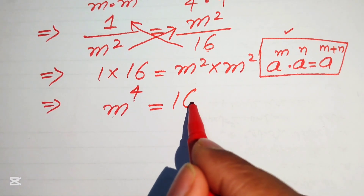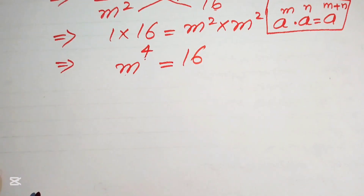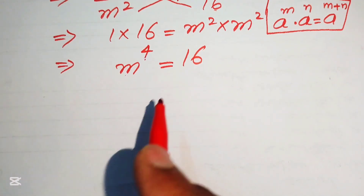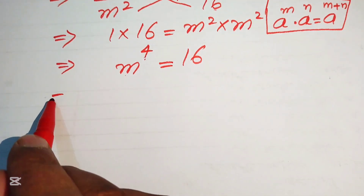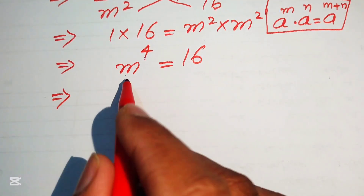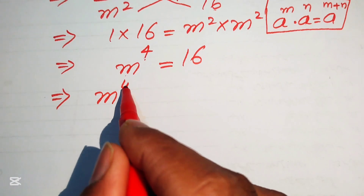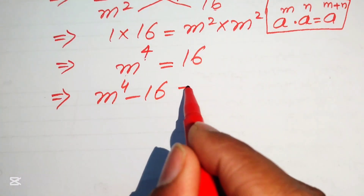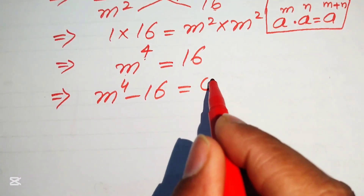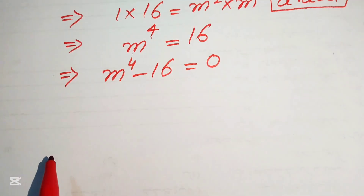Moving 16 to the left hand side, the equation becomes m⁴ - 16 = 0.